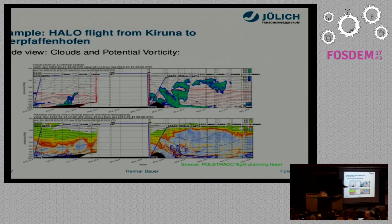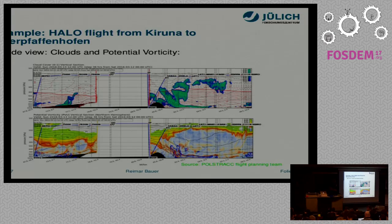Here is another flight. You see how these pictures are still used to discuss the mission. The color scheme shows the amount of a given species — in this case potential vorticity — which indicates whether you are in a polar region or a normal atmospheric region.